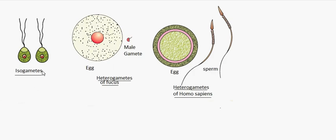Isogametes are shown here — both gametes are identical. In heterogametes, the egg is large and non-motile whereas the male gamete is small and motile. In human beings, the egg is large and non-motile, while the male gamete, the sperm, is motile and small in size.